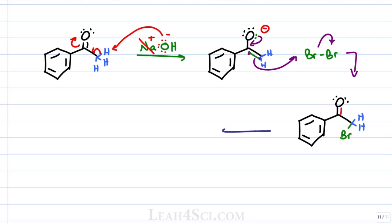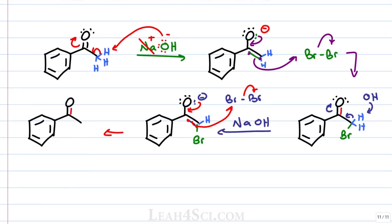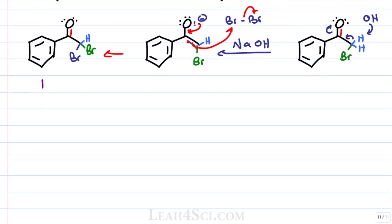We'll show this reaction happening a second time using another OH minus to grab the hydrogen, form the enolate and then attack another molecule of Br2. Our molecule now has a carbonyl reformed, two halogens and an even more acidic alpha hydrogen which means the reaction will happen one more time.